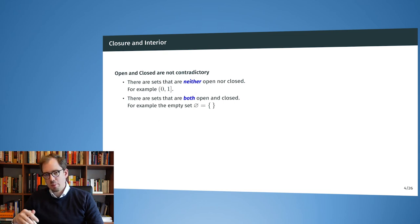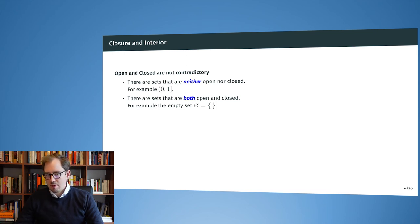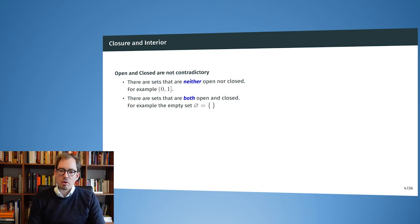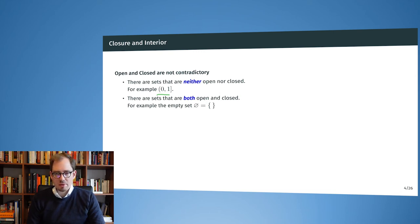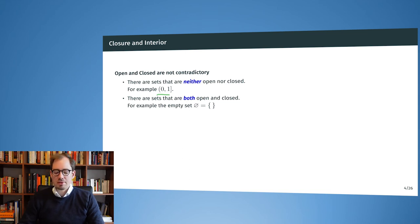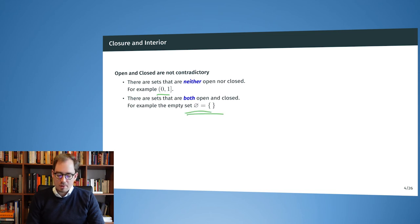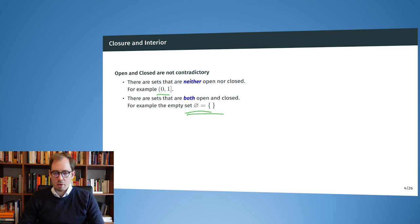It might look as if open and closed are contradictory properties, but they are not. They can exist in parallel. There can be sets that are neither open nor closed — for example, a range that is open on one end and closed on the other is neither open nor closed. There are also sets that are both open and closed, for example the empty set. You can run through the definitions of open and closed and see that both definitions hold in that case.